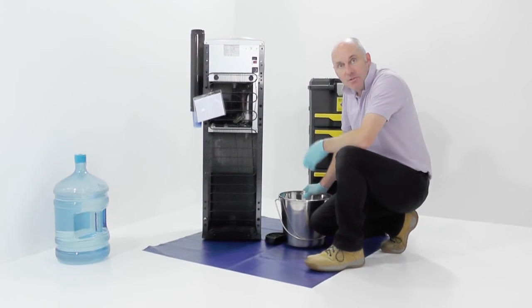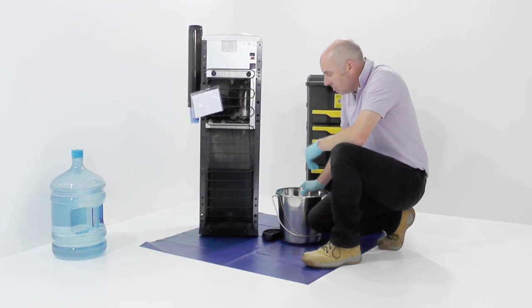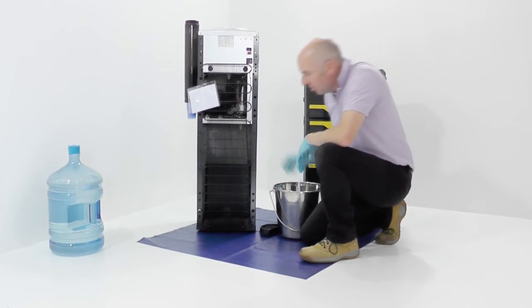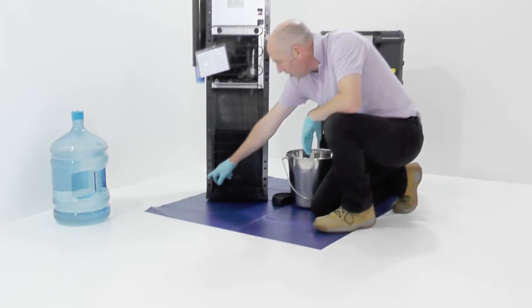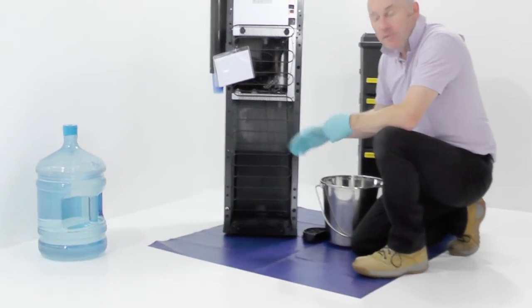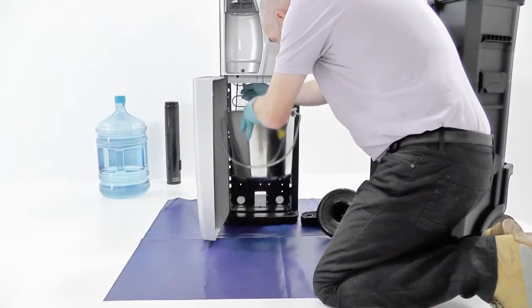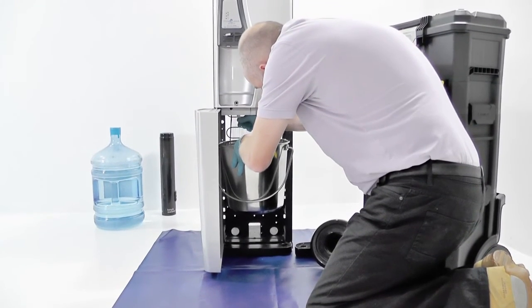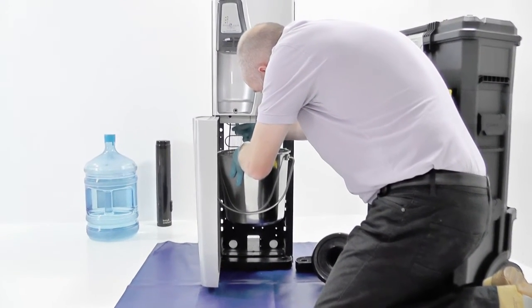Now we need to make sure there's none left in the machine. So we're going to locate the bung plug. On this particular machine it's quite low. Some other machines are in different areas. So the bung plug on this machine is placed in here.